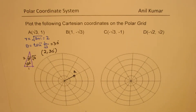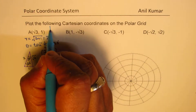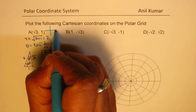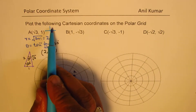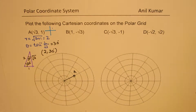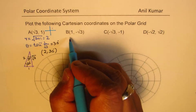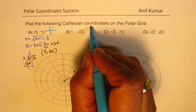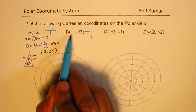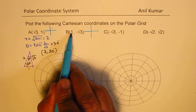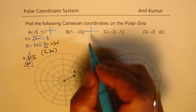You should have noticed that this coordinate was in quadrant 1, so the values are as expected. Now let's look into point B, which is (1, -√3). We are talking about a point in quadrant 4.